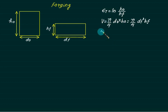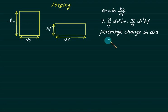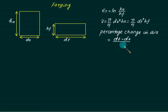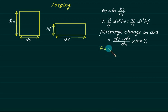Sometimes the question asks for percentage change in diameter. Since DF is larger, the formula is: (DF − D0) / D0 × 100. Using this we can find the percentage change. Force is given by average stress multiplied by final area, because this represents the maximum force in the operation.